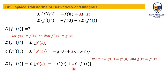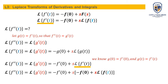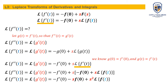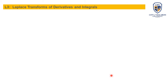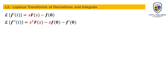We already know the Laplace transform of f prime of t, so substituting that expression in, the Laplace transform of the second derivative becomes: negative f prime of zero plus s times the quantity negative f of zero plus s times F of s, which simplifies to s squared F of s minus s times f of zero minus f prime of zero.